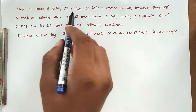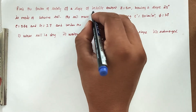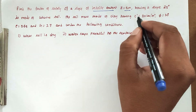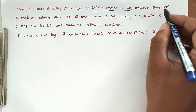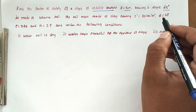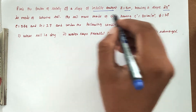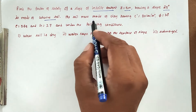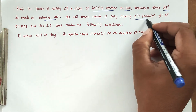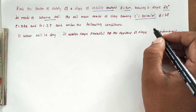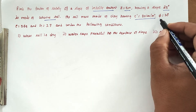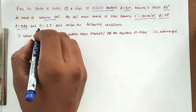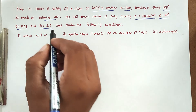The problem is: find the factor of safety of the infinite slope. The depth Z is equal to 5 meter, the slope angle beta is 25 degree, and the soil is cohesive clay. Given: cohesion C equal to 30 kilo Newton per meter square, angle of internal friction phi is 20 degree, void ratio E is 0.65, and specific gravity G is 2.7.